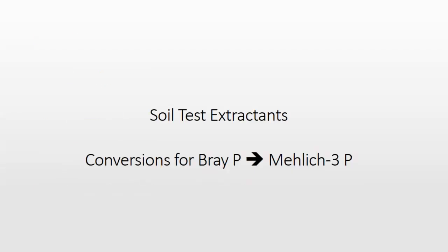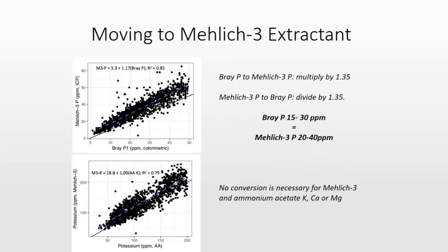Conversion from Bray to Malik — I showed this slide earlier. We looked at a couple thousand soil samples, measured Bray and Malik. There's a very good relationship there. Essentially, Malik extracts about 35% more than Bray phosphorus. The tri-states as originally published in 1995 — 15 to 30 ppm is now 20 to 40 Malik P. For ammonium acetate, Malik extracts just a little bit more, about 13 to 14% more. Can we treat those the same? Likely yes, in my opinion.